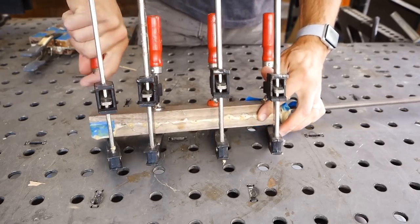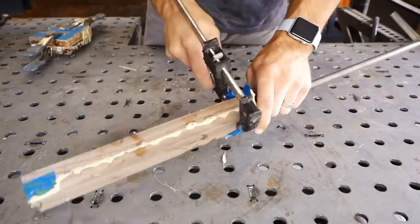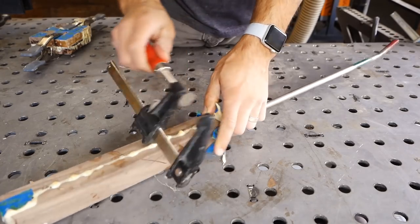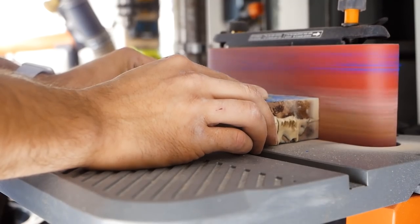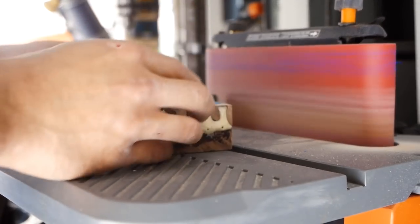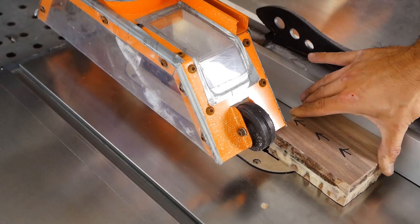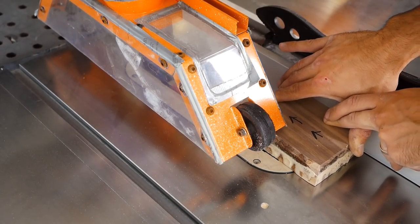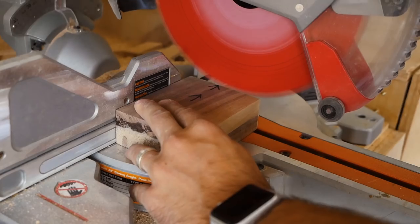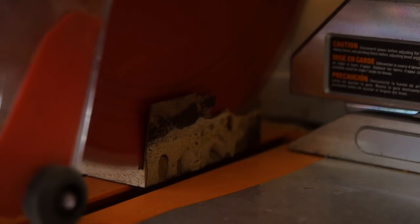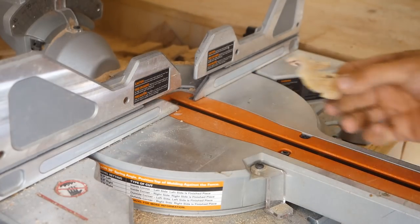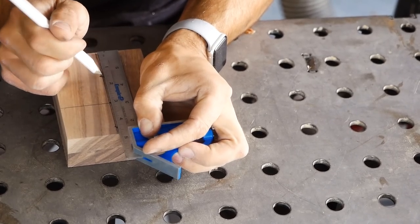After letting it sit overnight, I removed all the clamps after everything was dried and I need to start squaring this puppy up. So I put one side on the belt sander to create a nice even side and then put it on the table saw to create a nice parallel matching side. Once I had two matching sides, I then put it on the miter station to square it up for its final dimension.